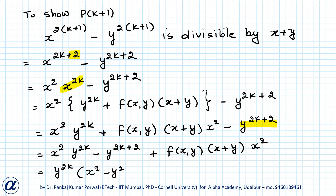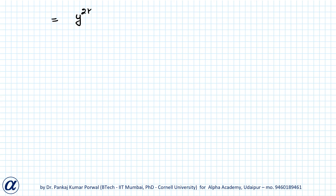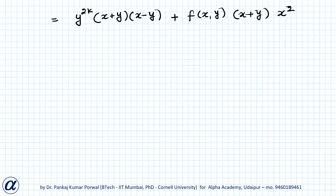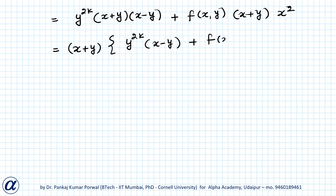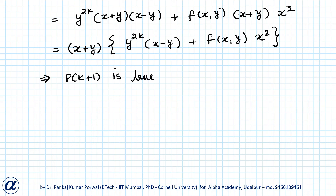So I have y to the power 2k into x squared minus y squared plus f(x,y) into x plus y into x squared. Writing x squared minus y squared as x plus y into x minus y, and taking x plus y common, I get x plus y into y to the power 2k times x minus y plus f(x,y) times x squared. This is divisible by x plus y, so P(k+1) is true, and hence proved.